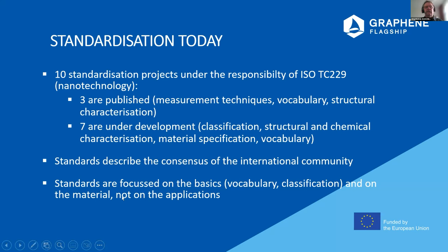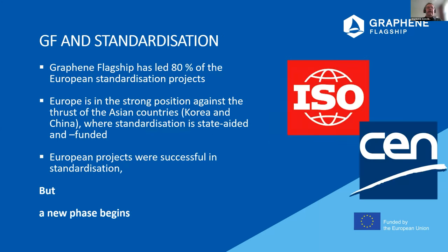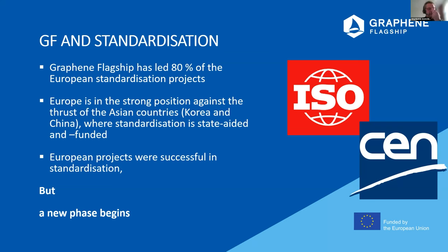Standards always describe the consensus of the international community — this is not the top of the research, it's really a consensus, and this takes time. At the moment, the standards are focused on the basics, which is very important — vocabulary, terminology, classification, and the material itself, not so much on the applications of the materials. The graphene flagship has led 80% of the European standardization projects in the field of graphene. At the moment, Europe is in a strong position against the thrust of Asian countries, especially Korea and China where standardization is state-aided and funded.